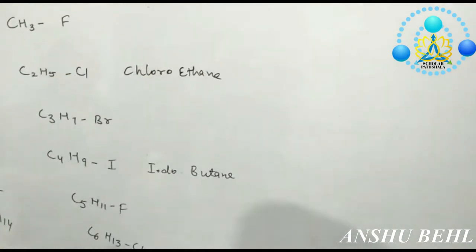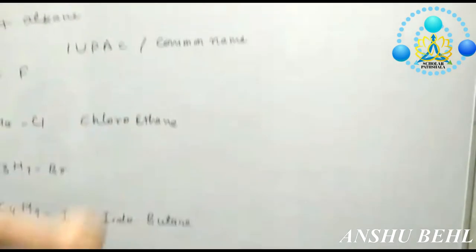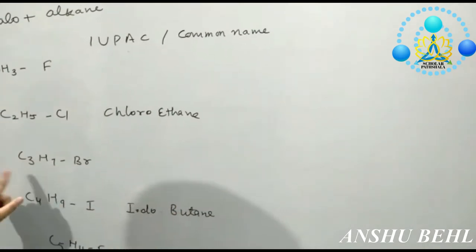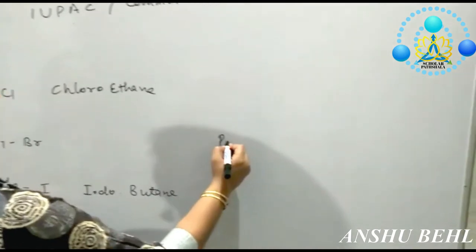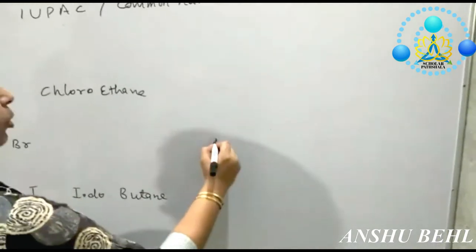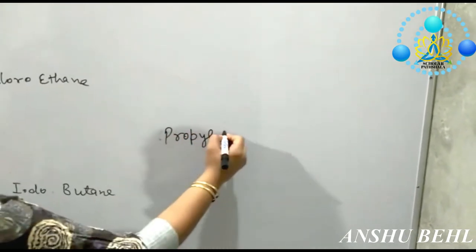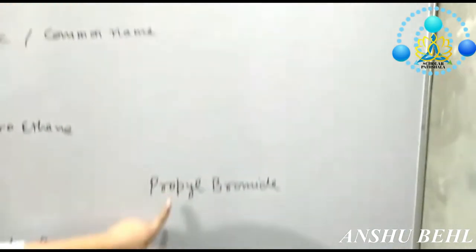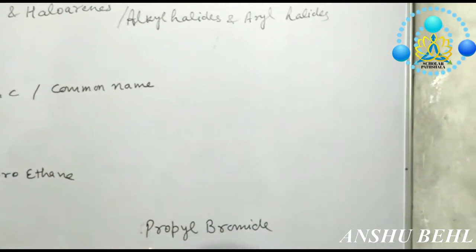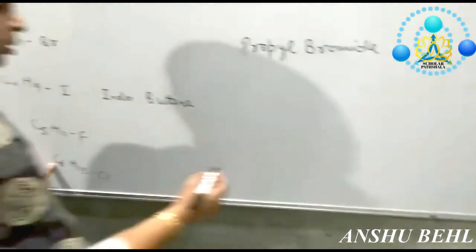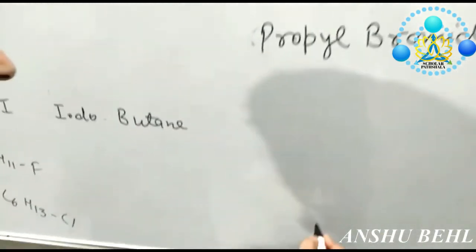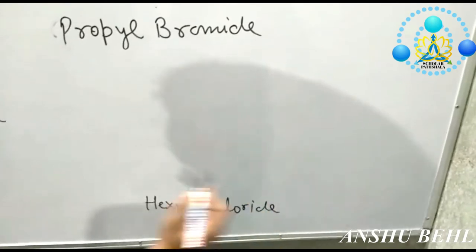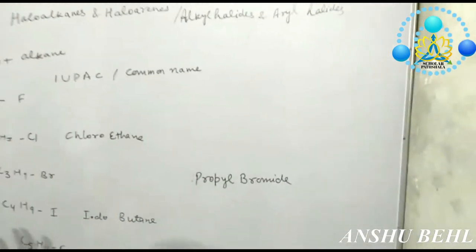In the common name system, you give the name as 'alkyl halide'. For example, bromopropane can be written as propyl bromide — first you write the alkyl group (propyl) then the halide (bromide). Similarly, chlorohexane can be written as hexyl chloride. This is how we write the names of all haloalkanes.